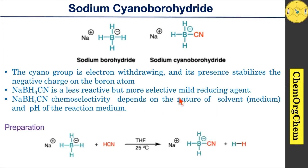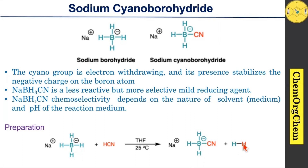Let's start by discussing its preparation method. Sodium cyanoborohydride can be prepared by the reaction of sodium borohydride and hydrogen cyanide in THF medium, which provides the corresponding sodium cyanoborohydride along with hydrogen gas.